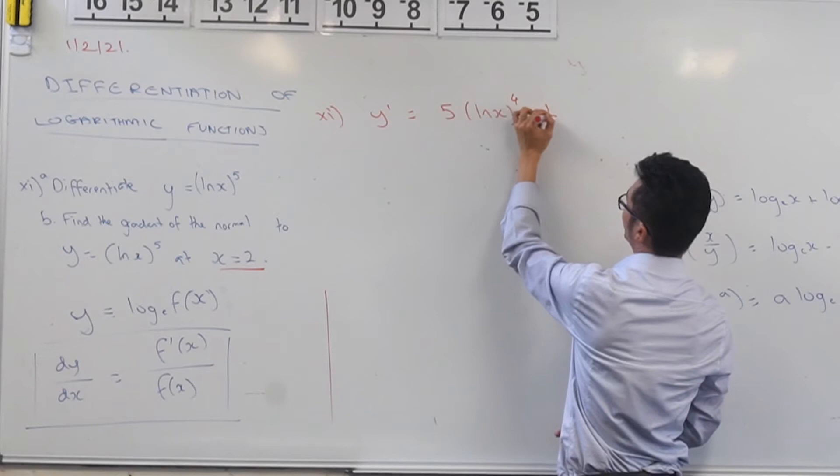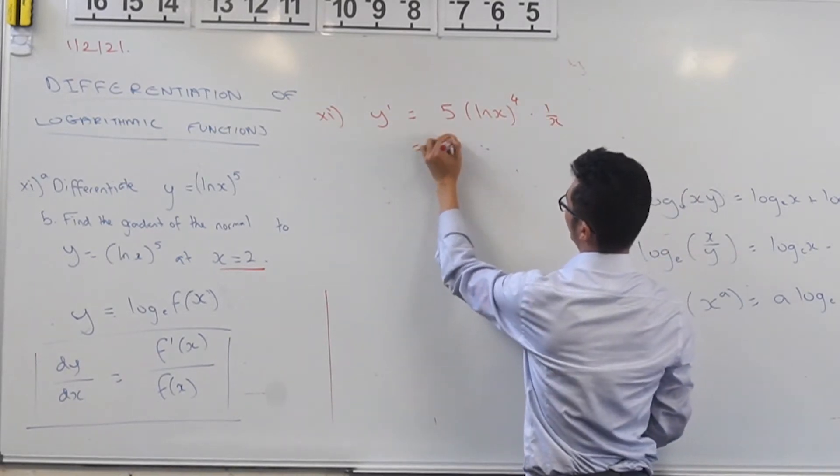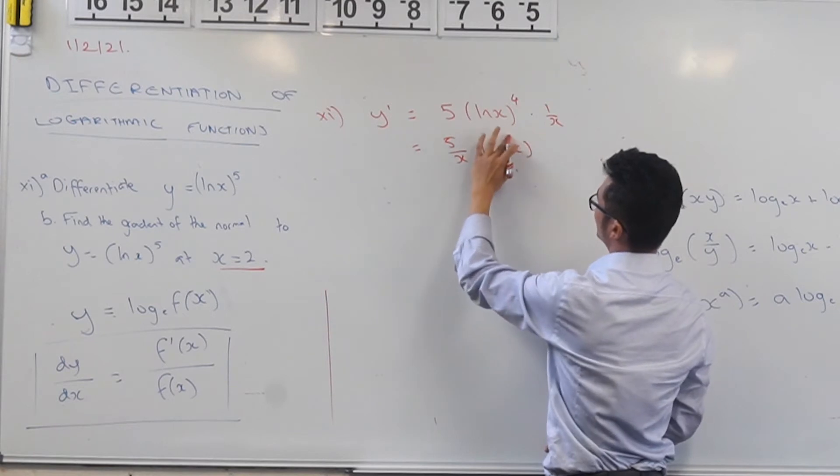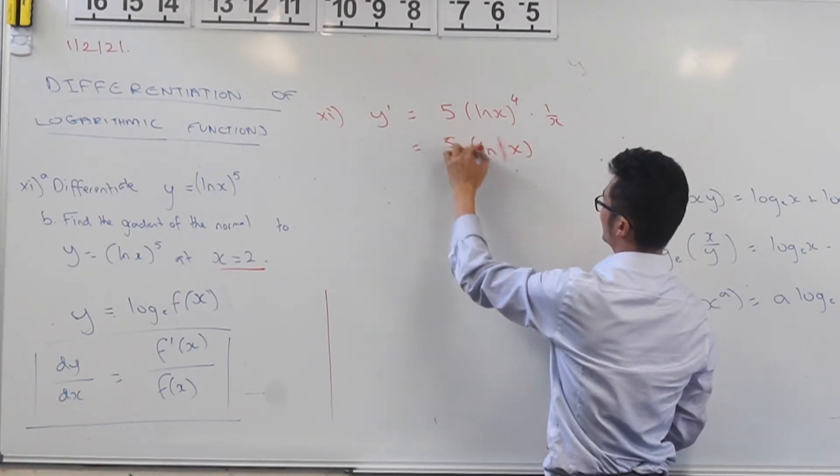So that's going to be multiplied by 1 over x, so that's going to be 5 over x times ln of x, all ln x to the power of 4.